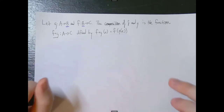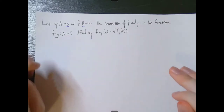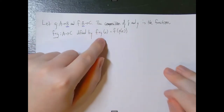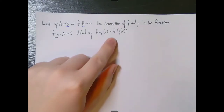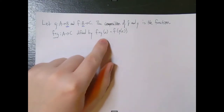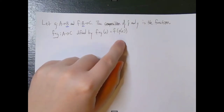I want to stress that when we say f composed with g of x, we're not saying apply g to x and then apply f. What we're saying is we're making a new function that does the same thing as if we applied f to g of x.